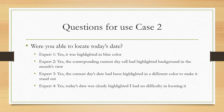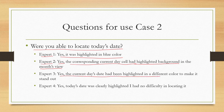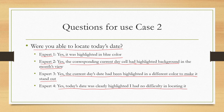Questions were asked to the experts regarding this use case. First question: were you able to locate today's date? Expert 1 said yes, it was highlighted in blue. Expert 2 said yes, the current day cell had a highlighted background in the months view. Experts 3 and 4 also confirmed today's date was clearly highlighted, with no difficulty locating it.